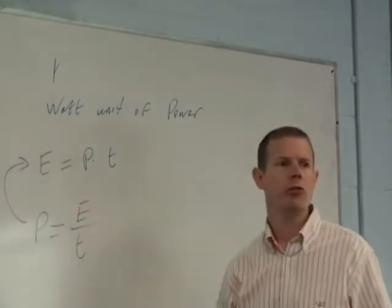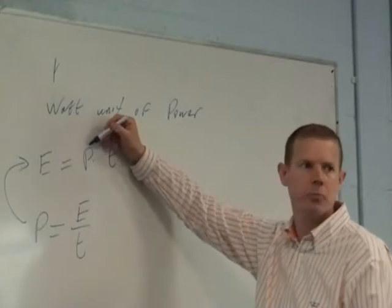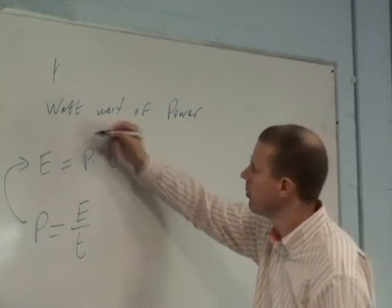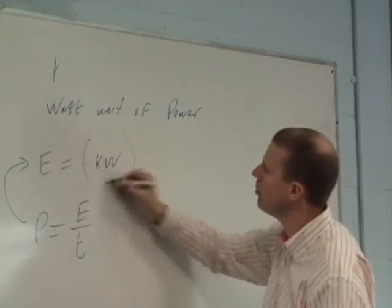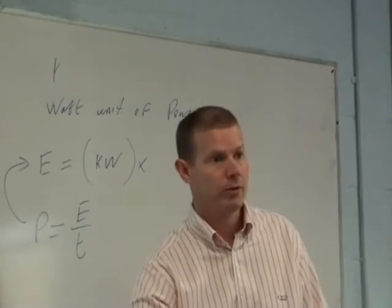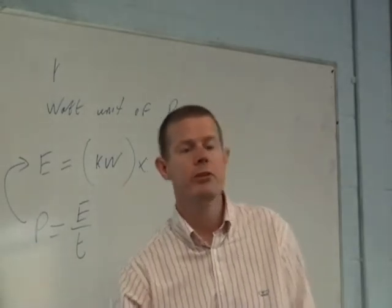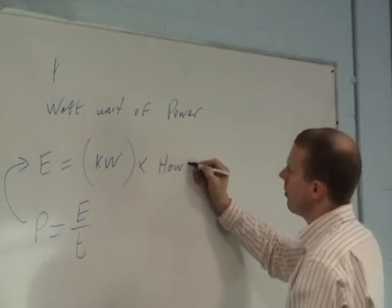So the ESB wants to know how much energy we use. They use the basic unit of power, which is the watt, and that's too small, so they're going to say it's a kilowatt. So the energy we use is going to be, according to the ESB, is the kilowatt multiplied by, and again, you could say the number of seconds because that's our basic unit, but they said that's too small. So instead of seconds, they use hours.